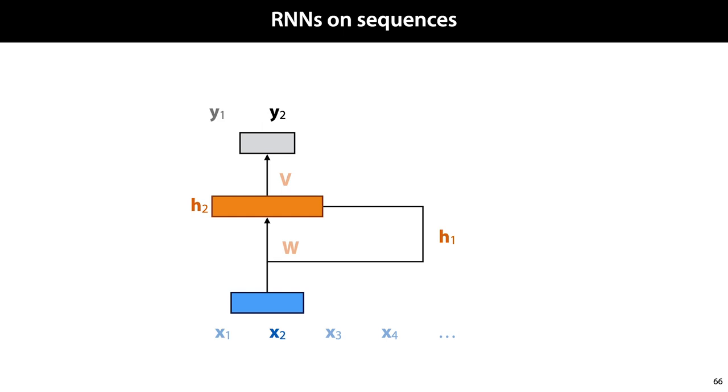We then feed the second input in the sequence, X2, and we now receive the previous hidden layer, H1, concatenated to the input, and multiply it by W to produce the second hidden layer, H2. This is again multiplied by V to produce the second output. And so on. We feed the network the third vector, concatenated to the second value of the hidden layer, giving us the third value of the hidden layer. We multiply that by V, giving us the third output Y3. And in this way, a recurrent neural network allows us to map an input sequence to an output sequence.